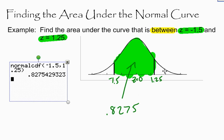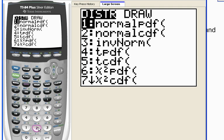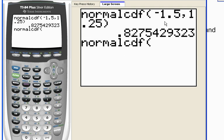Now let me show you one more little thing about the calculator and finding the area under the curve. If, for some reason, you type in the left-hand boundary and the right-hand boundary backwards. So if I type in normal CDF for 1.25, comma, and then put in negative 1.5, and I close my parentheses and hit enter...